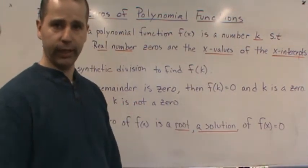Also note that a zero of a polynomial function is also called a root. So we can call it a root or a solution of the equation f of x equal to zero. So if it is a solution or a root of this equation, then it's a zero.